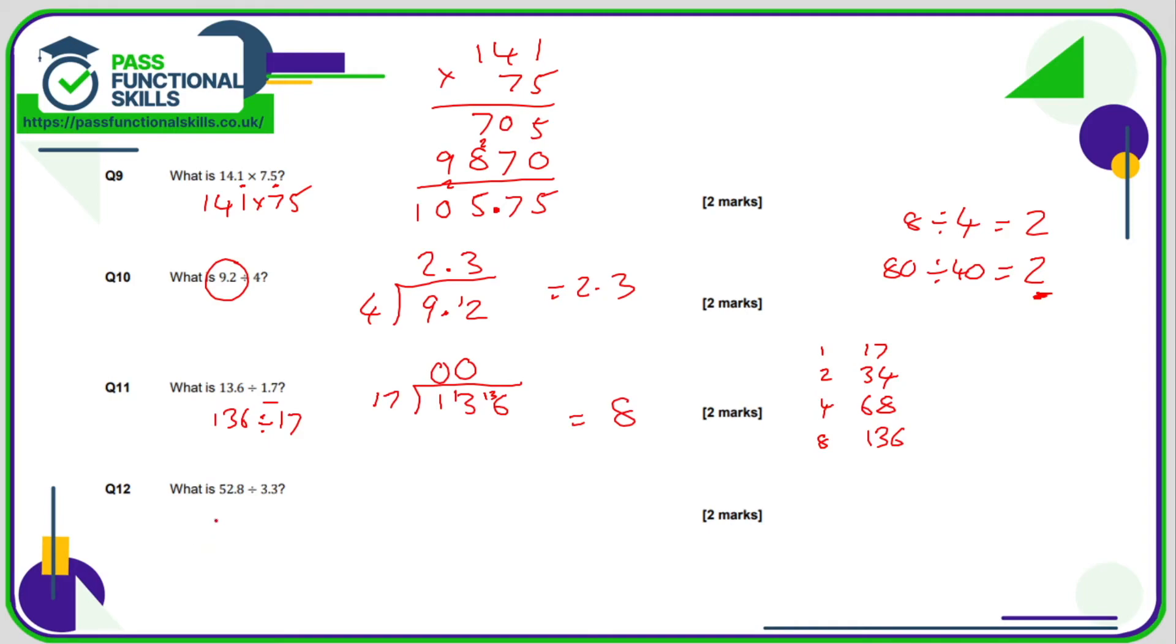We're going to do the same thing with question 12. 52.8 divided by 3.3 is the same as 528 divided by 33. So let's see how this goes. Can we use a bus stop method? How many 33s go into 5? None. How many 33s go into 52? Well, it goes once with a remainder of, well, what's the difference between 52 and 33? Well, if it was 53, that would be a difference of 20. But it's 52, so that's a difference of 19.